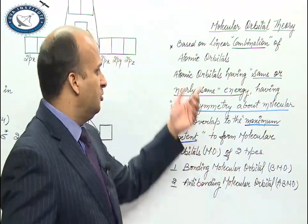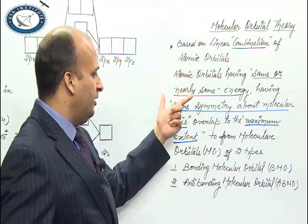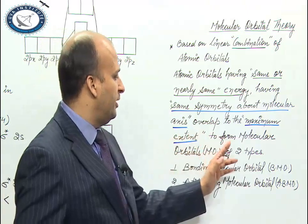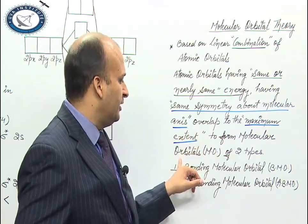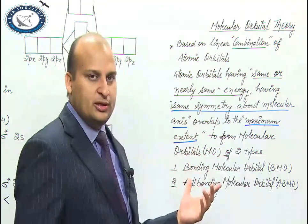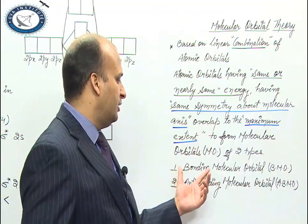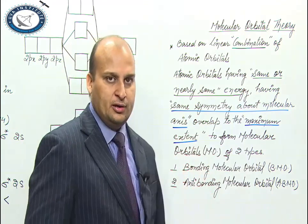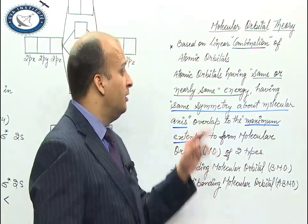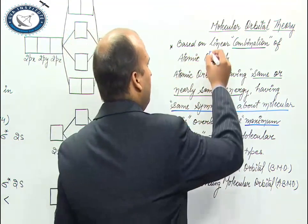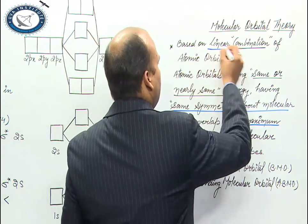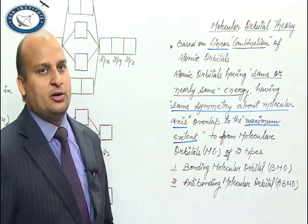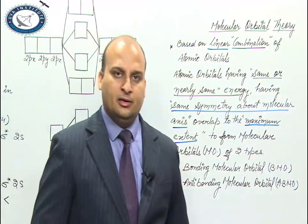This can also be asked in the exam — explain in brief. When atomic orbitals combine, they form two types of molecular orbitals: bonding and anti-bonding. This is because of the linear combination — it produces two types of molecular orbitals.